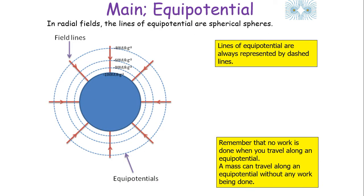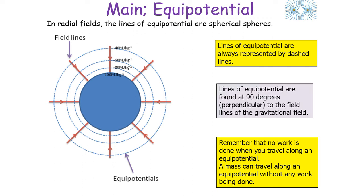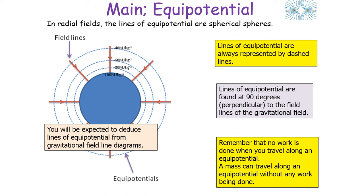In radial fields, the lines of equipotential are spherical. Lines of equipotential are always represented by dashed lines. No work is done when you travel along an equipotential line — a mass can travel along an equipotential line without any work being done. Lines of equipotential are found at 90 degrees to the field lines of the gravitational field, and you'll be expected to deduce lines of equipotential from gravitational field line diagrams.